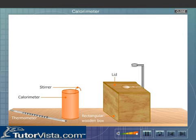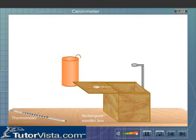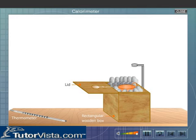Wooden box and wooden lid are used as they are good insulators of heat. The space between the calorimeter and wooden box is filled with cotton wool which is a bad conductor of heat.